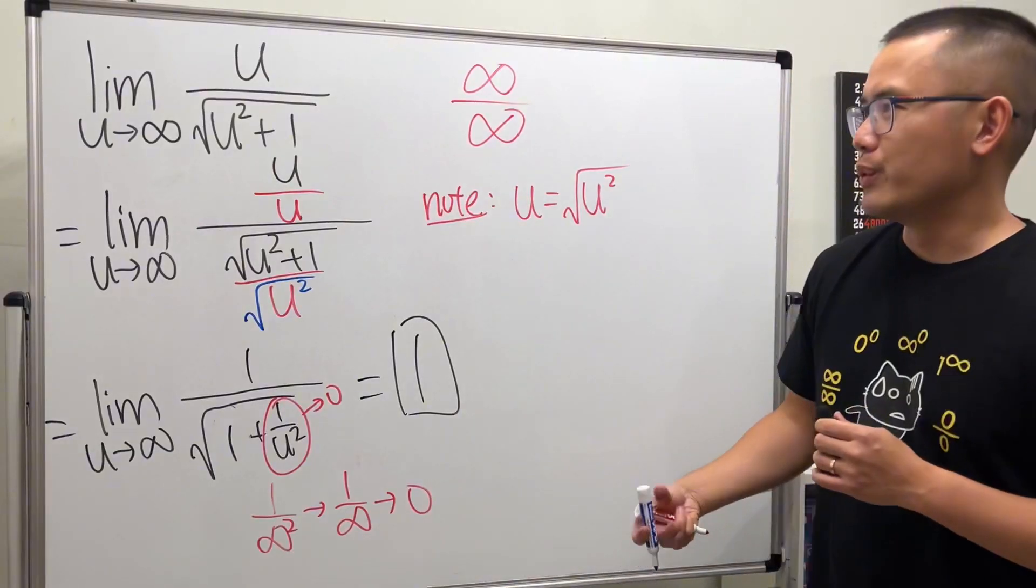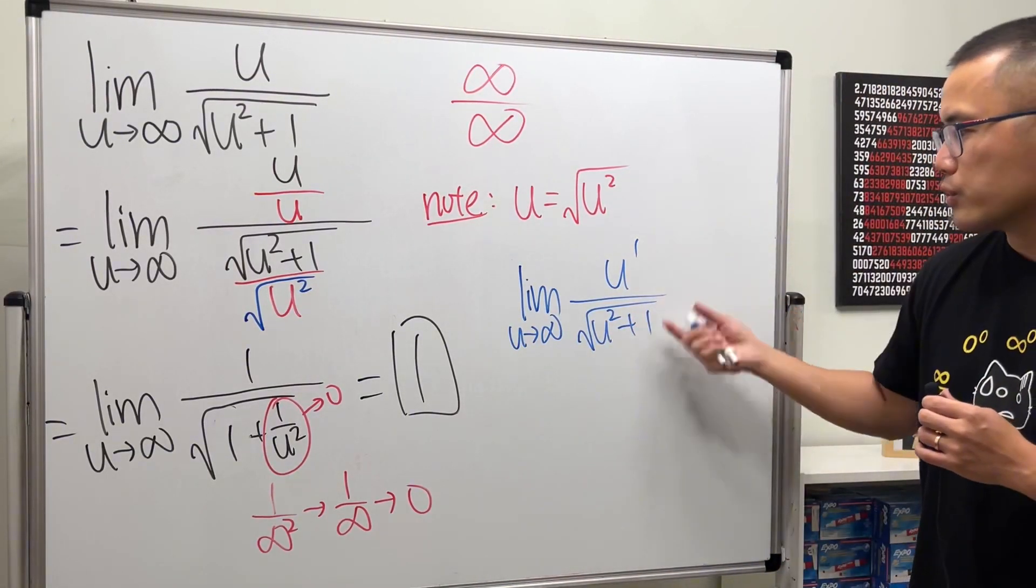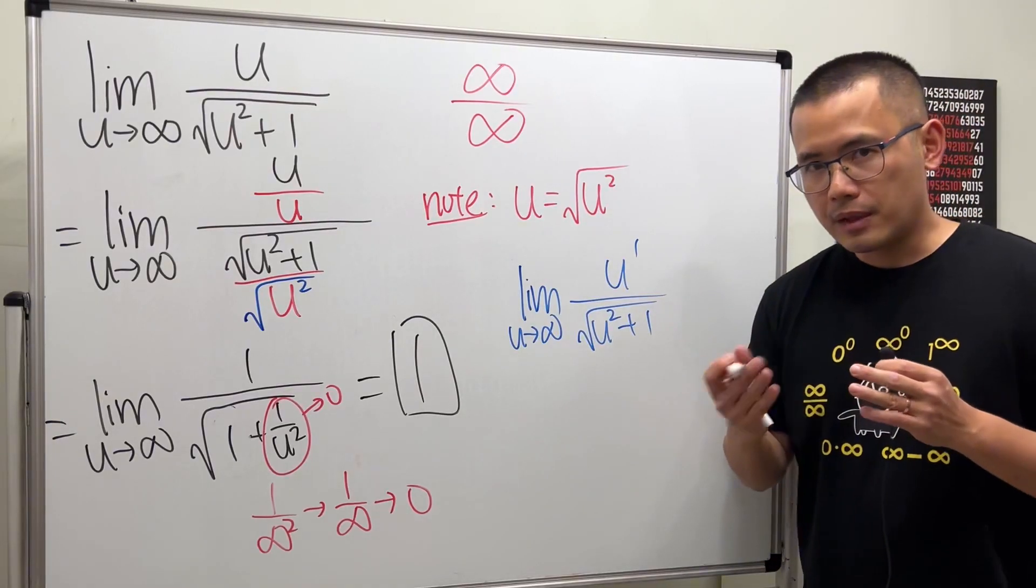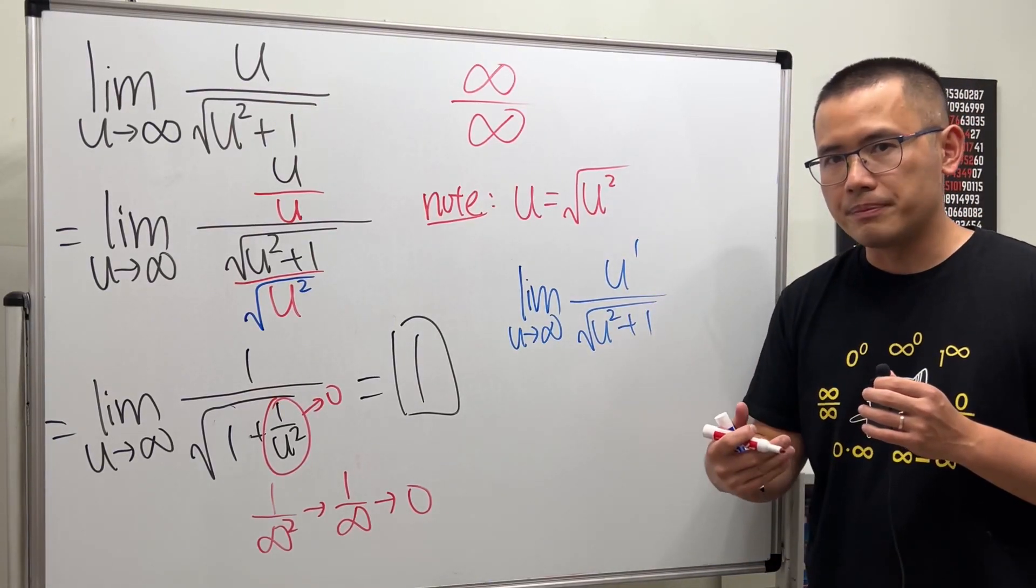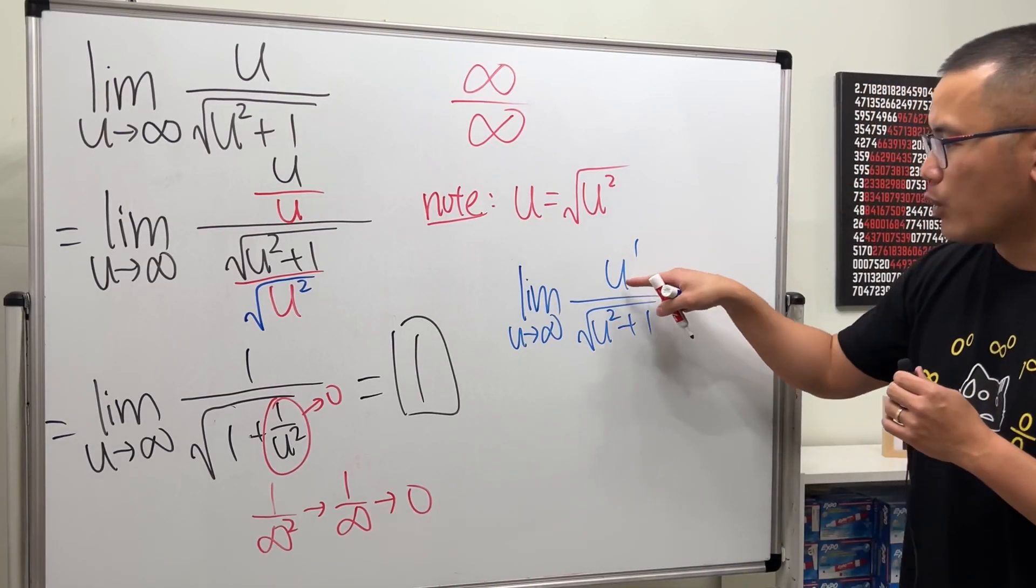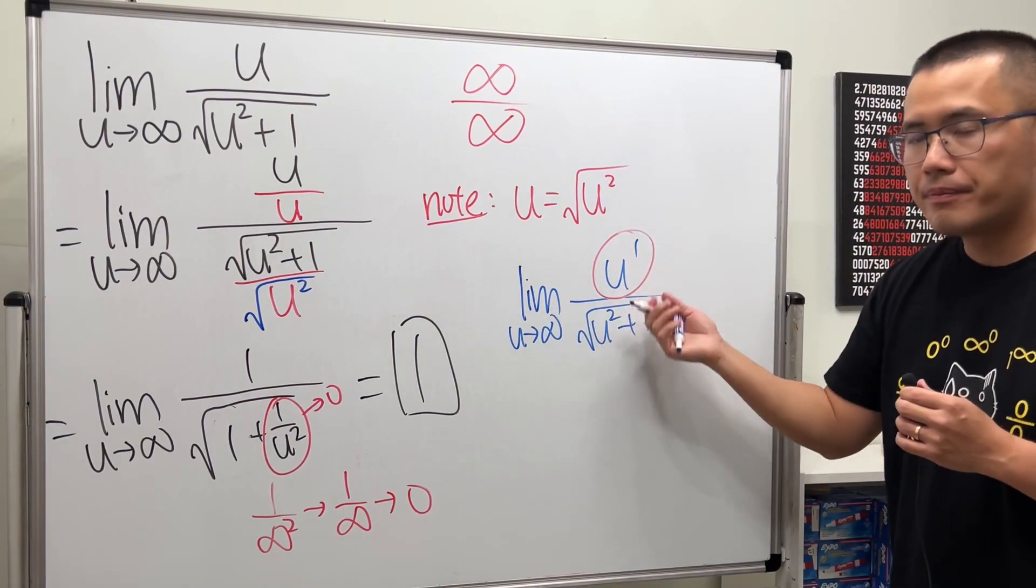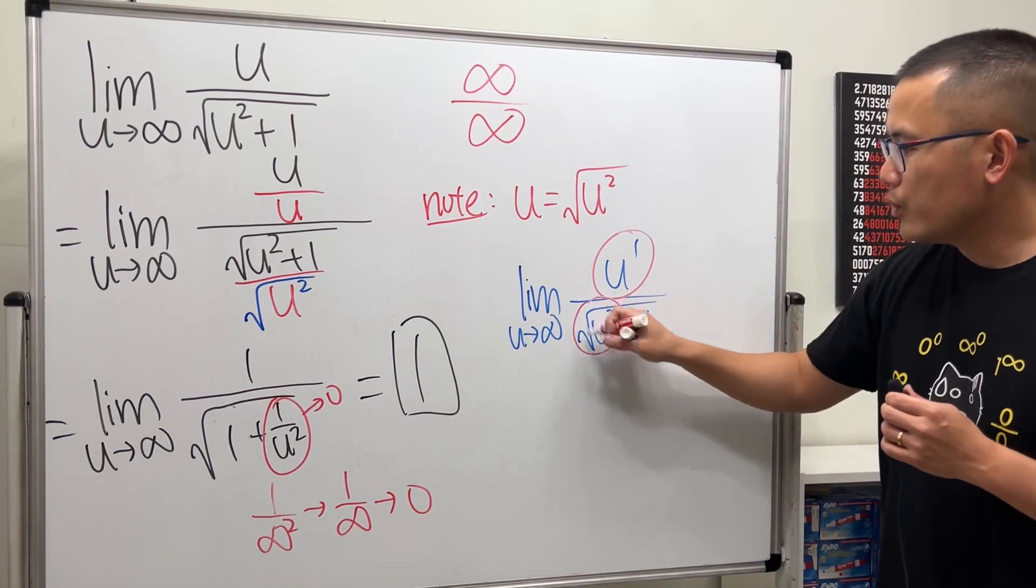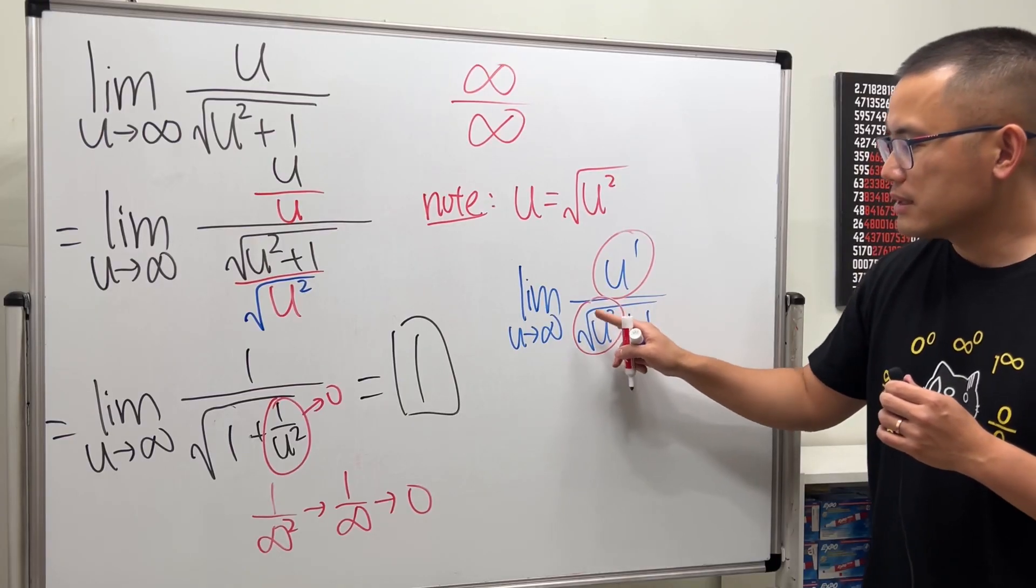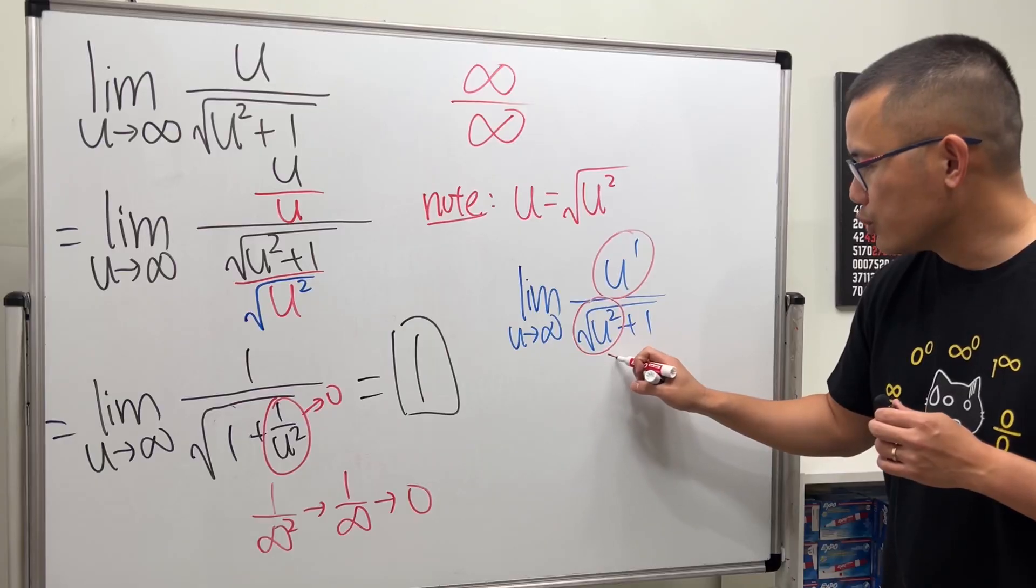Now, here's a quick way to do it. When u is approaching infinity and we have a quotient, we can just compare the dominating part of the top and also the bottom. By the dominating part, I mean the highest power of our variable in this case. So, of course, we have u to the first power on the top. On the bottom, we have this u squared inside of the square root. Well, square and square root cancel. You really just get u.